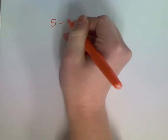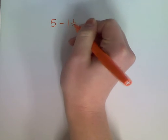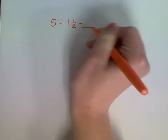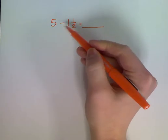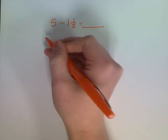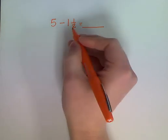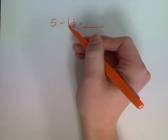Five take away one and a half. Today we are going to subtract mixed numbers. I have five wholes and I'm going to take away one and a half, which is a whole take away a mixed number. And again, a mixed number is a whole with a fraction.